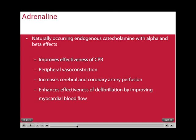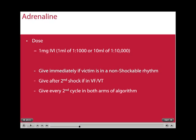Adrenaline is a naturally occurring endogenous catecholamine with alpha and beta receptor effects. The theory behind giving adrenaline is that it improves the effectiveness of cardiopulmonary resuscitation by causing peripheral vasoconstriction and increasing cerebral and coronary artery perfusion, which enhances the effectiveness of defibrillation by improving myocardial blood flow. The normal dose given in an arrest situation is 1 mg intravenously or intraosseously. Give adrenaline immediately if the victim is in a non-shockable rhythm such as PEA or asystole. If they are in a shockable rhythm such as VF or VT, the first dose of adrenaline should be given after the second shock, then every second cycle in both arms of the algorithm.